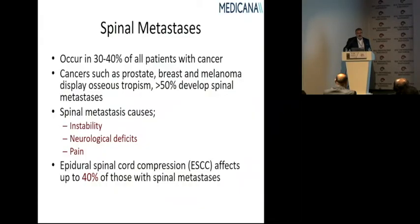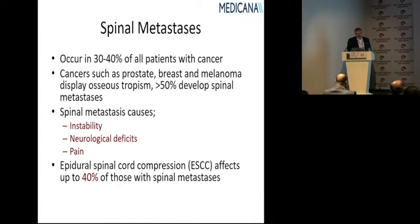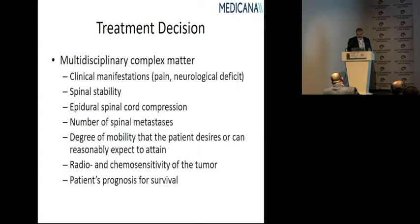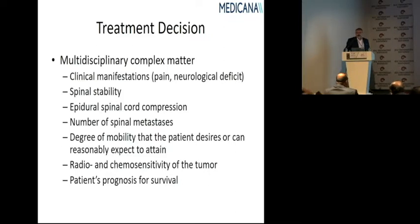Spinal metastases cause instability, neurological deficits, and pain, and we should deal with these problems. About 40% of spine metastases have some kind of spinal cord compression, and treatment decisions should be multidisciplinary. There are many parameters we should consider.